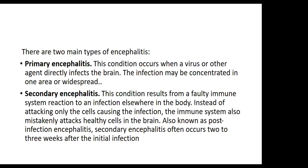Secondary encephalitis results from a faulty immune system reaction to infection elsewhere in the body. Instead of attacking only the cells causing the infection, the immune system also mistakenly attacks healthy cells in the brain. Also known as post-infectious encephalitis, secondary encephalitis often occurs two to three weeks after the initial infection.